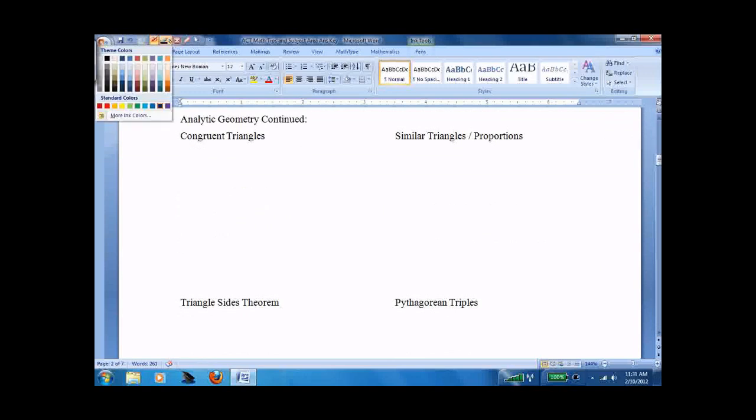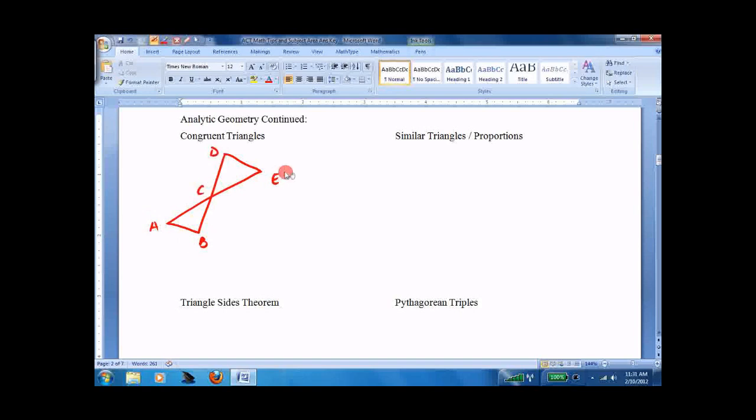Congruent triangles. You'll get a problem that looks something like this. They might tell you they're parallel lines. Or they might just say angle A and angle E are congruent. Which other sides are congruent? Well, what you have to do is recognize that, and they'll actually say this side and this side are congruent. These are vertical angles. Looking at, let's make it this side and this side. Angle, side, angle. You don't need to know any of that from geometry. Just know that they're going to be congruent. And what you want to do is redraw the triangles.